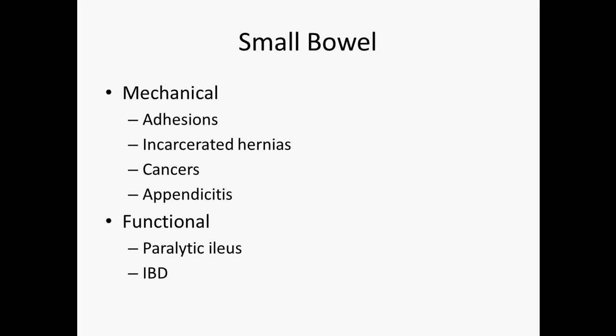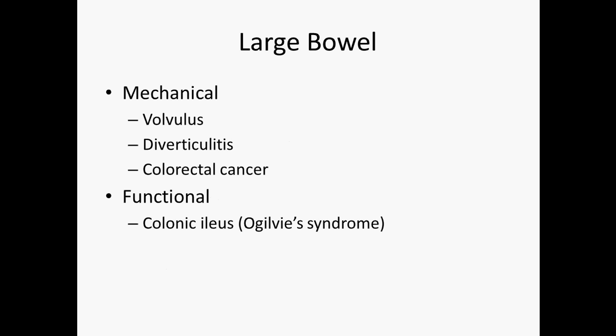Inflammatory bowel disease can also cause a functional bowel blockage. In the large bowel, there is volvulus — a twisting of the bowel — which is more common in older people. There is also diverticulitis, which could be a true diverticulum like a Meckel's diverticulum or from diverticulosis. Colorectal cancer is probably the most important thing on the differential diagnosis to rule out.